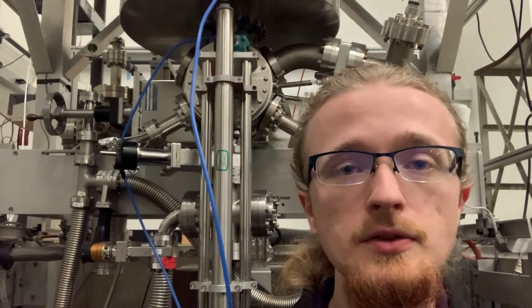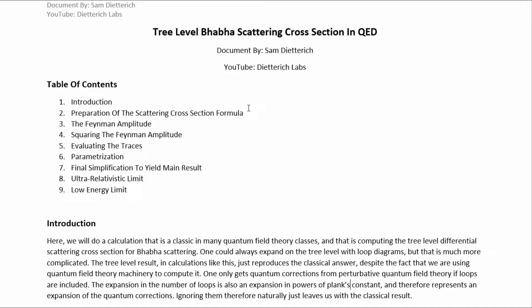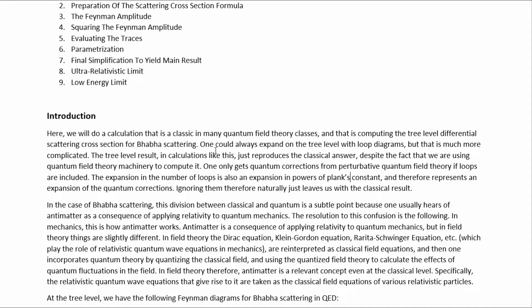It's a fun calculation. It's another pretty result. I think it's quite satisfying. Let's begin with the math section for tree-level BABA scattering in quantum electrodynamics. We're going to calculate the tree-level scattering cross-section for BABA scattering. One could always expand on the tree-level with loops, but this is much more complicated.